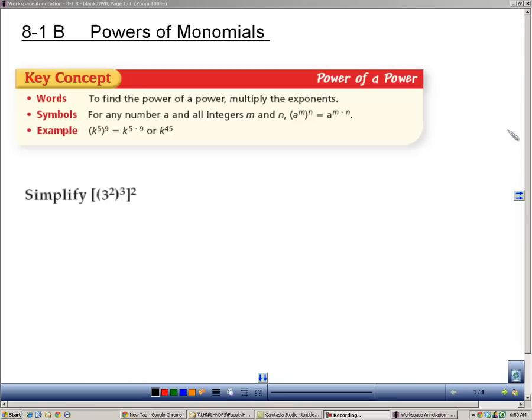Section 81B is about powers of monomials. These are some more rules that we need to learn with exponents. The first rule here is called the power of a power rule. When you take a power to another power, you multiply the exponents. This rule is different than the last rule we learned in which we add the exponents, so really try hard not to confuse the two.